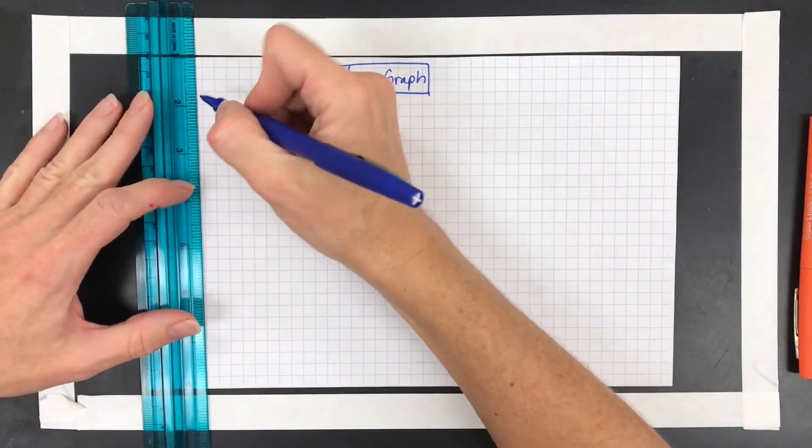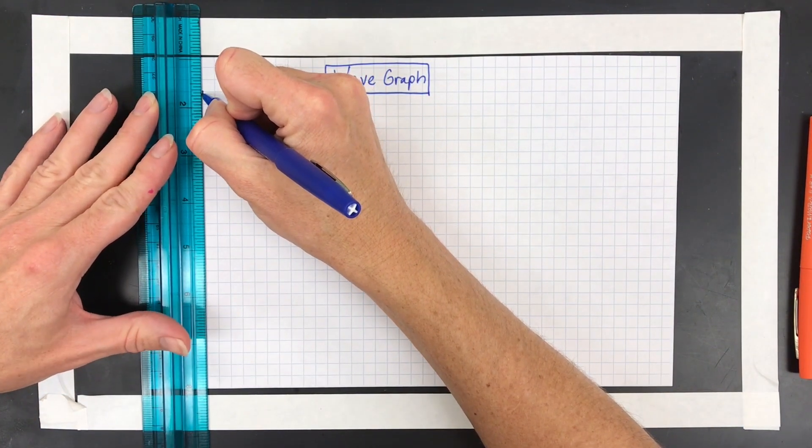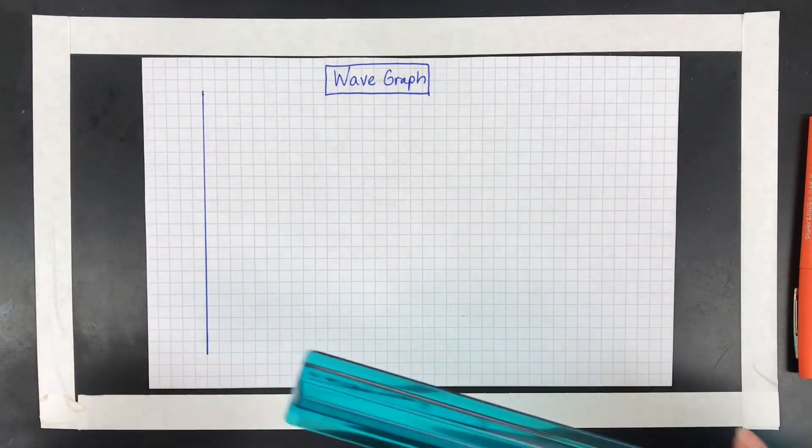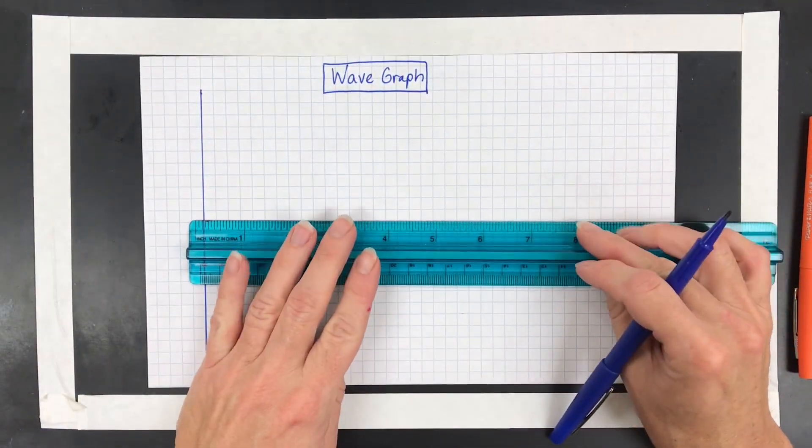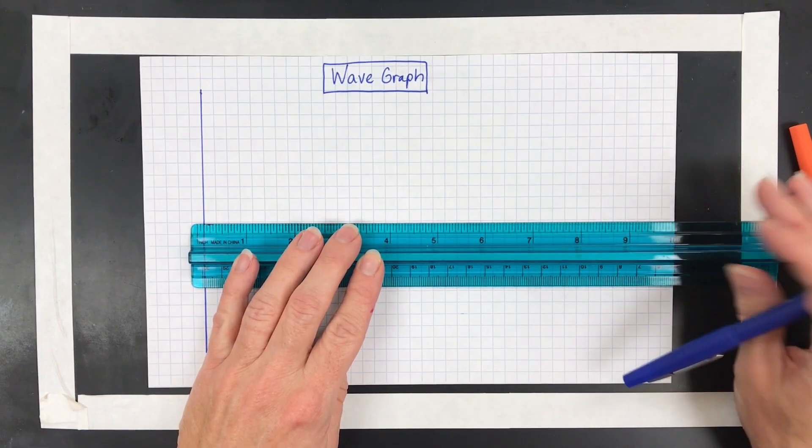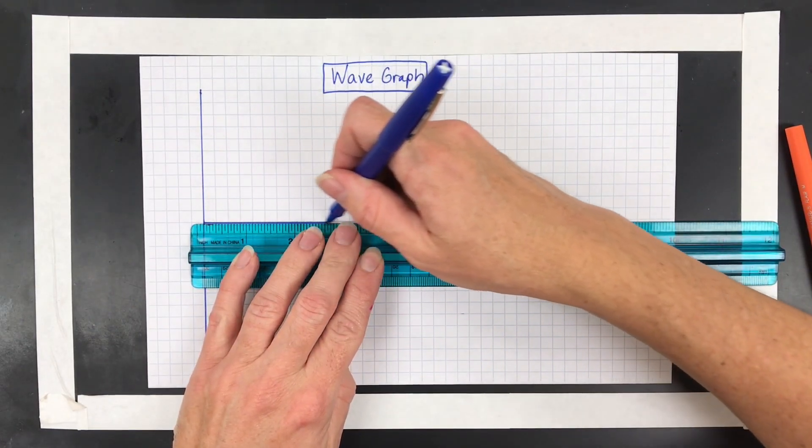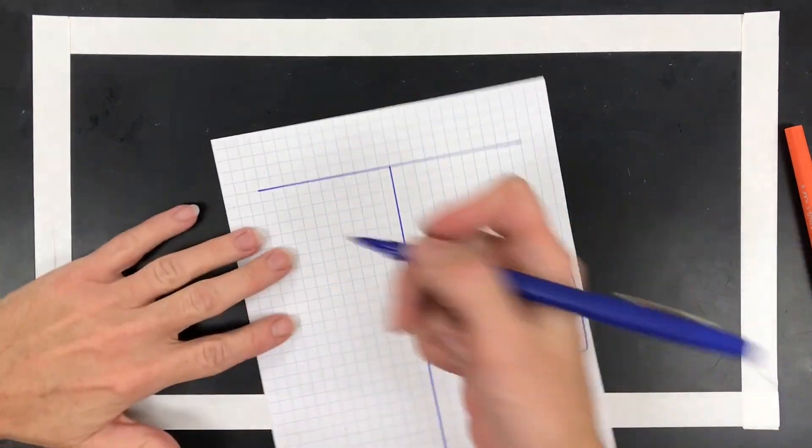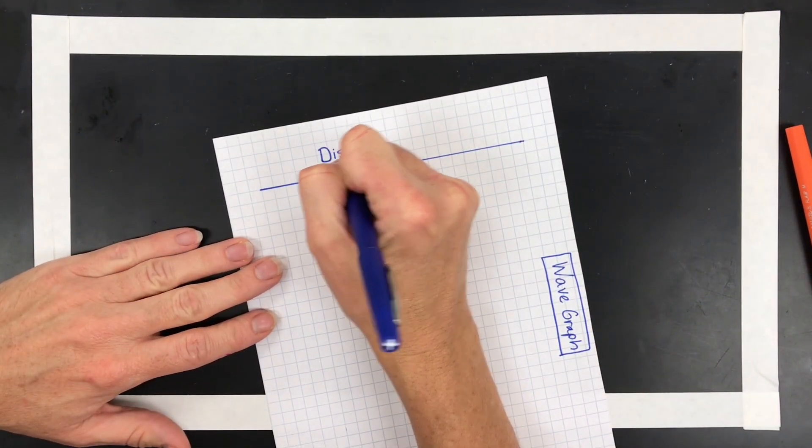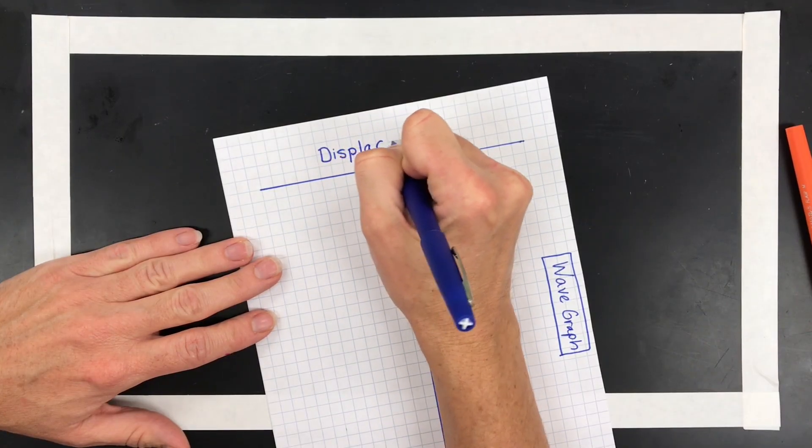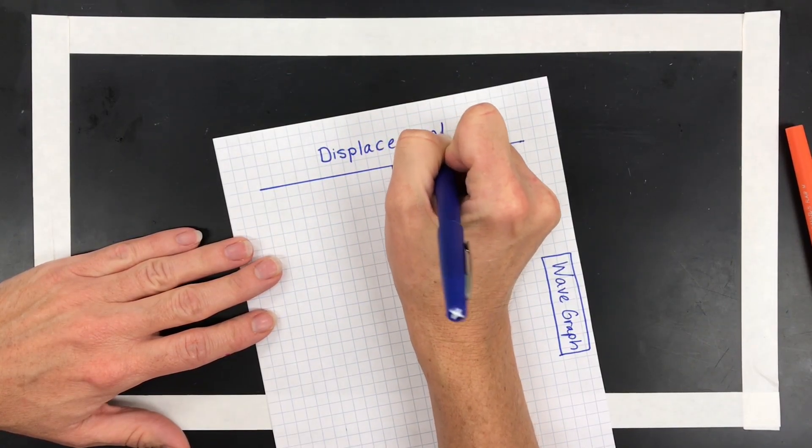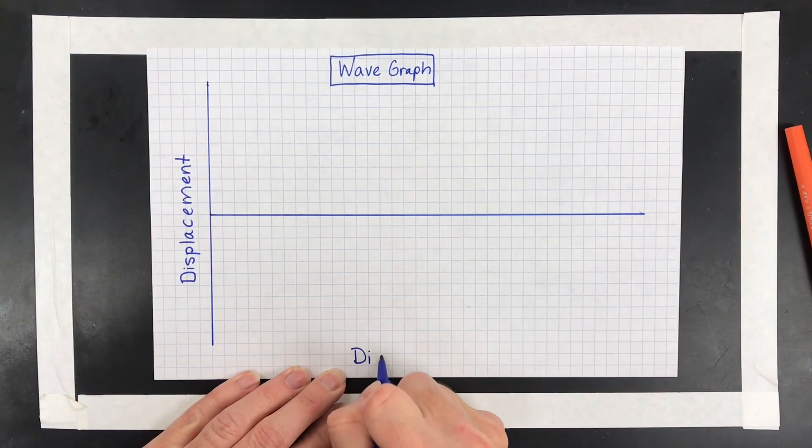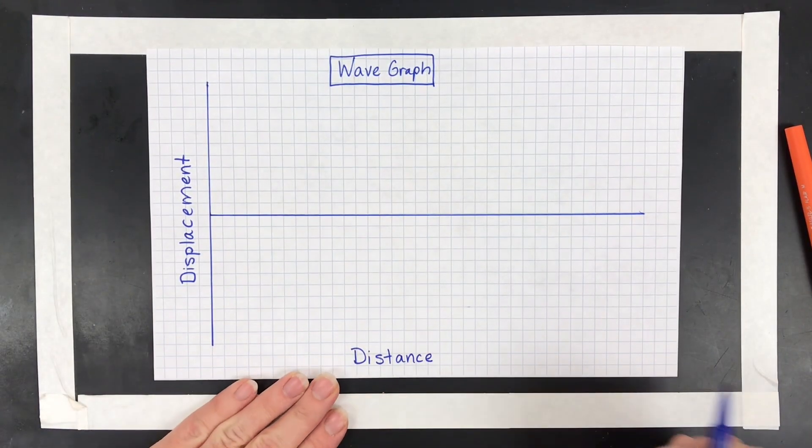Then the next thing is to draw your axes here. Use a ruler, get a nice straight line. And then we'll find that middle point, which is about here. And that's going to be called our resting position for a wave graph. And then displacement, or really this is going to be amplitude, but let me just call it displacement. That's kind of a nice catch-all label that works for most subjects. And then down here, the most common label for physics and chemistry is going to be distance.